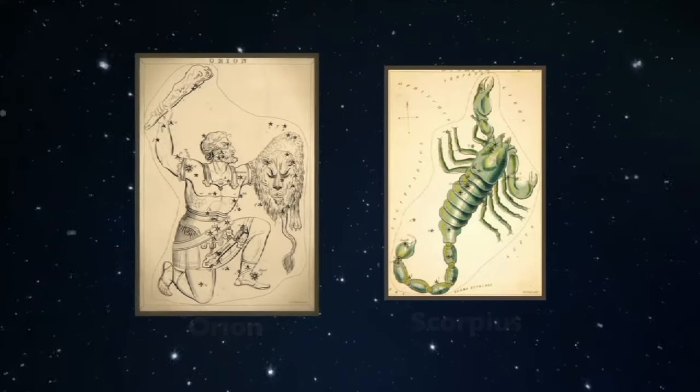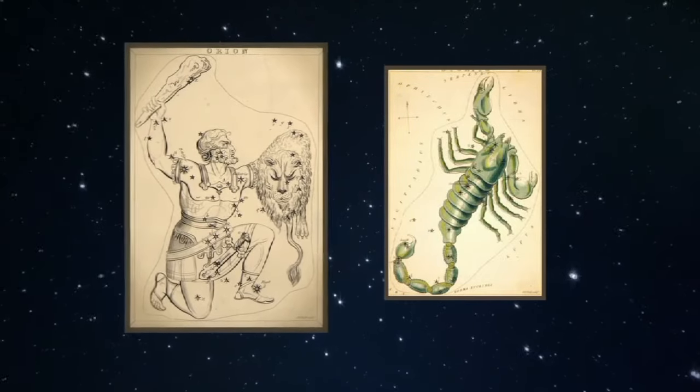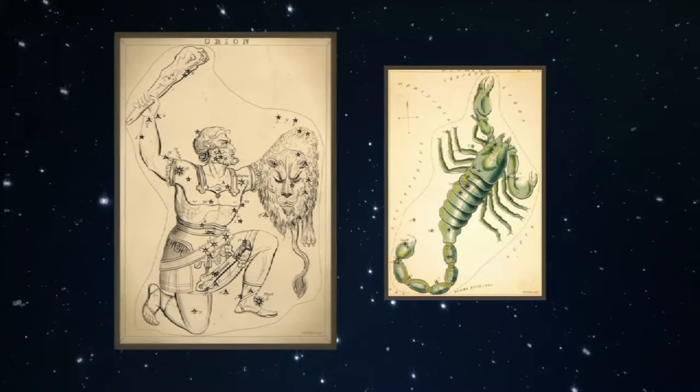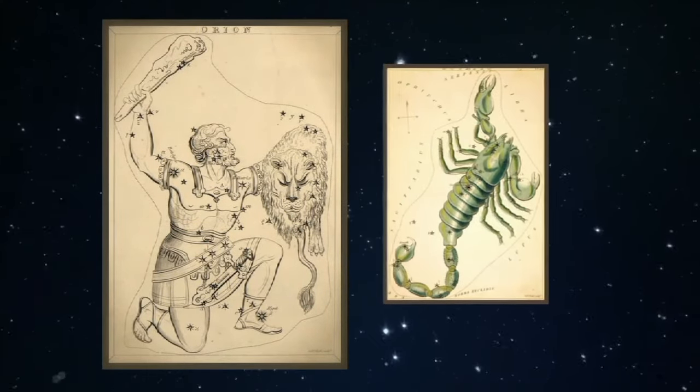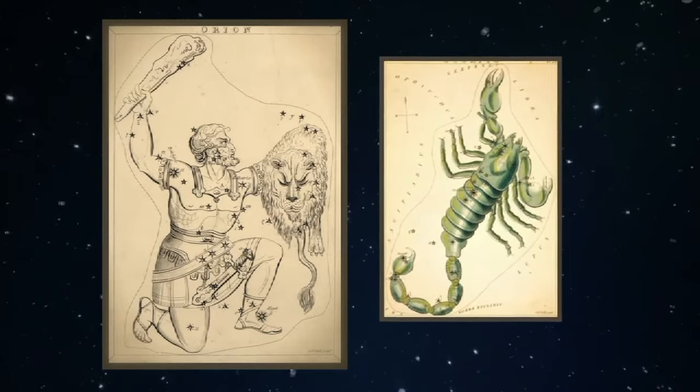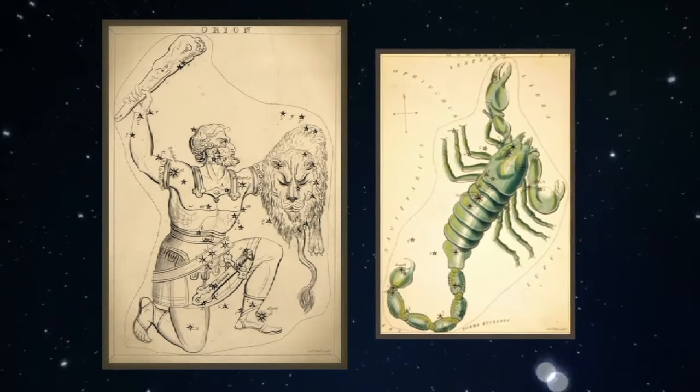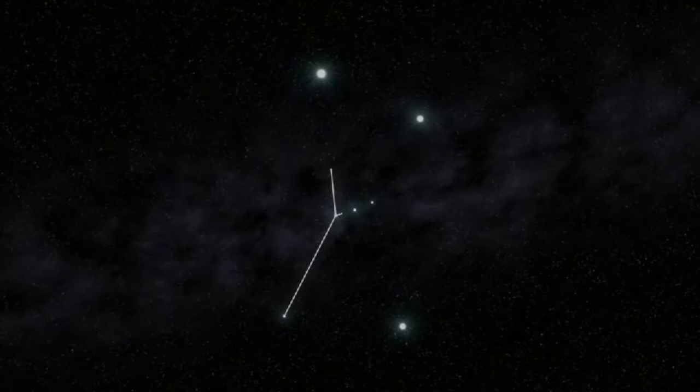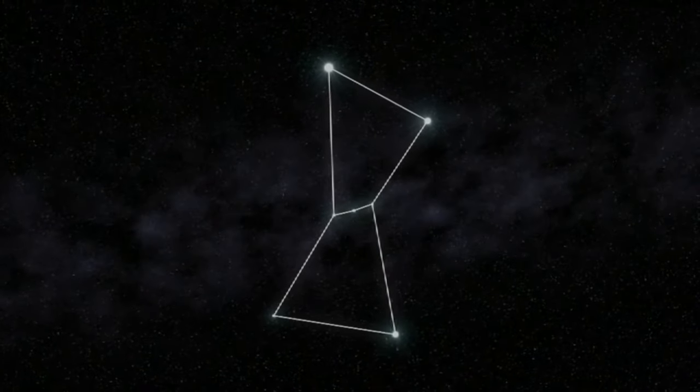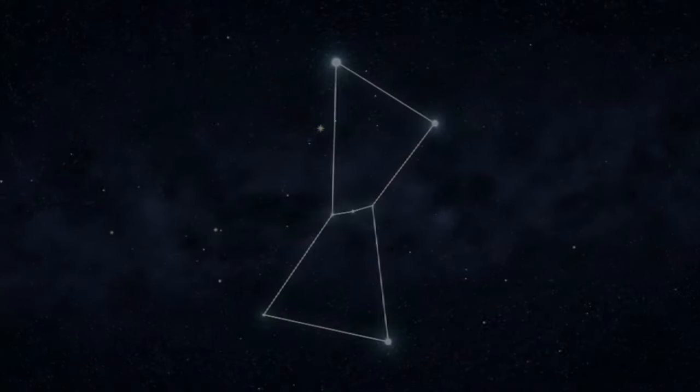The story goes that Orion the Hunter boasted about his hunting prowess and threatened to kill every animal on Earth, so Scorpius was sent to stop Orion. Fearing the trouble they would cause, the gods separated the two. As a result, Orion appears in the winter sky and Scorpius in the summer.